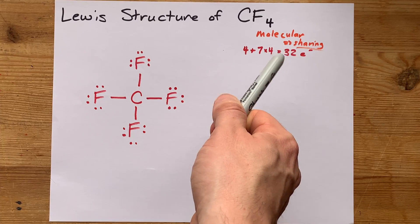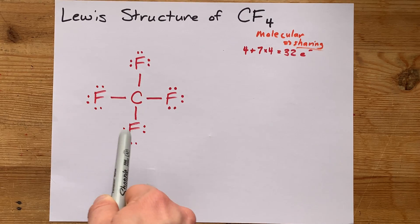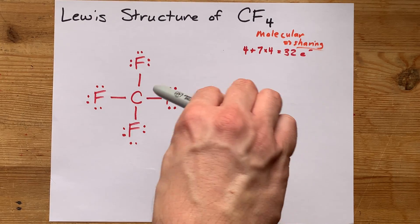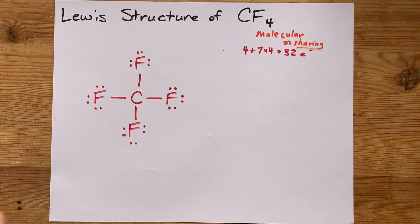If I had extra electrons left over after I filled the octets on the outer atoms here, I would have dumped them onto the central atom, but that was not the case here, so I won't.